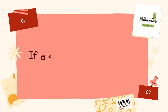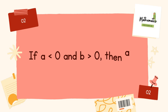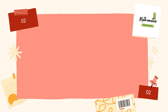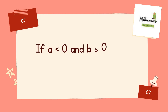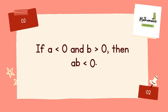Number 2. If a less than 0 and b greater than 0, then a times b is? Answer: if a less than 0 and b greater than 0, then a times b is less than 0.